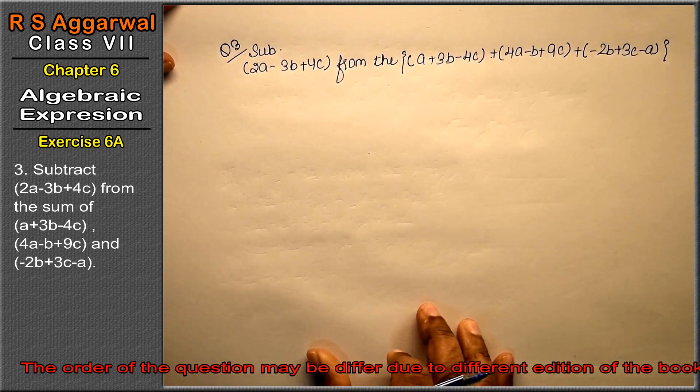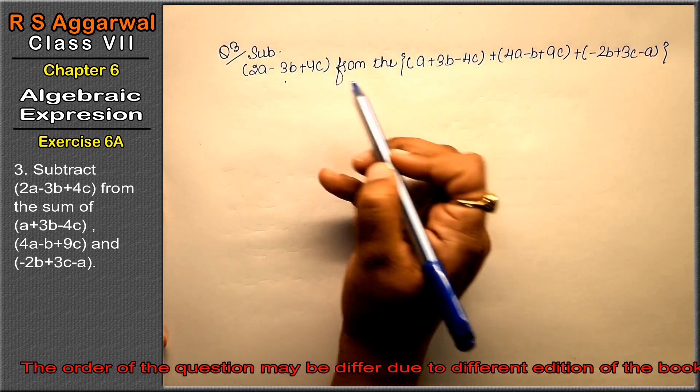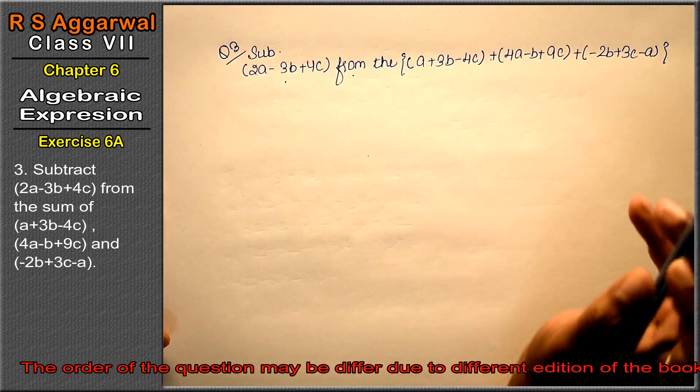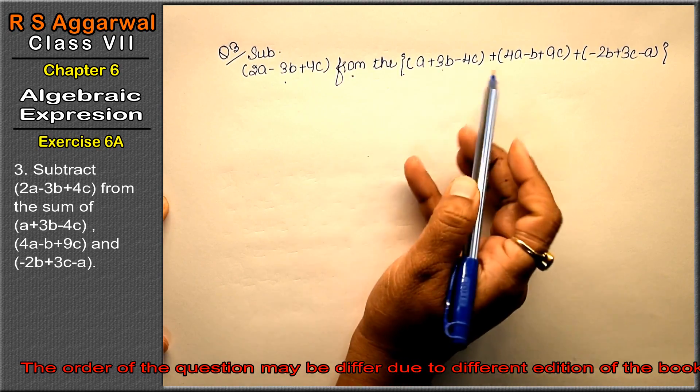Friends, I have elaborated this question. We need to subtract this from something. From what? From the sum of these three expressions. So first we will find the sum of the expressions that come after 'from'.